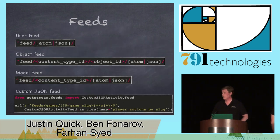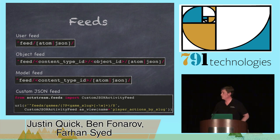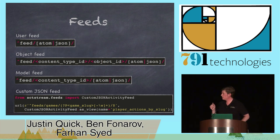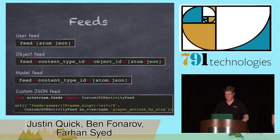The second way to get information out of the app is through feeds. Any of these support either Atom or JSON. For the user feed, as long as you're authenticated, it returns the user feed in machine-readable format. Object feed does a lookup for a specific object by content type and object ID and returns a stream of actions where they participated. Model feed just does everything based on the content type. You can also add custom JSON feeds — like with the game slug example — you can pass URL parameters directly into your streams and render things out through a custom JSON feed.